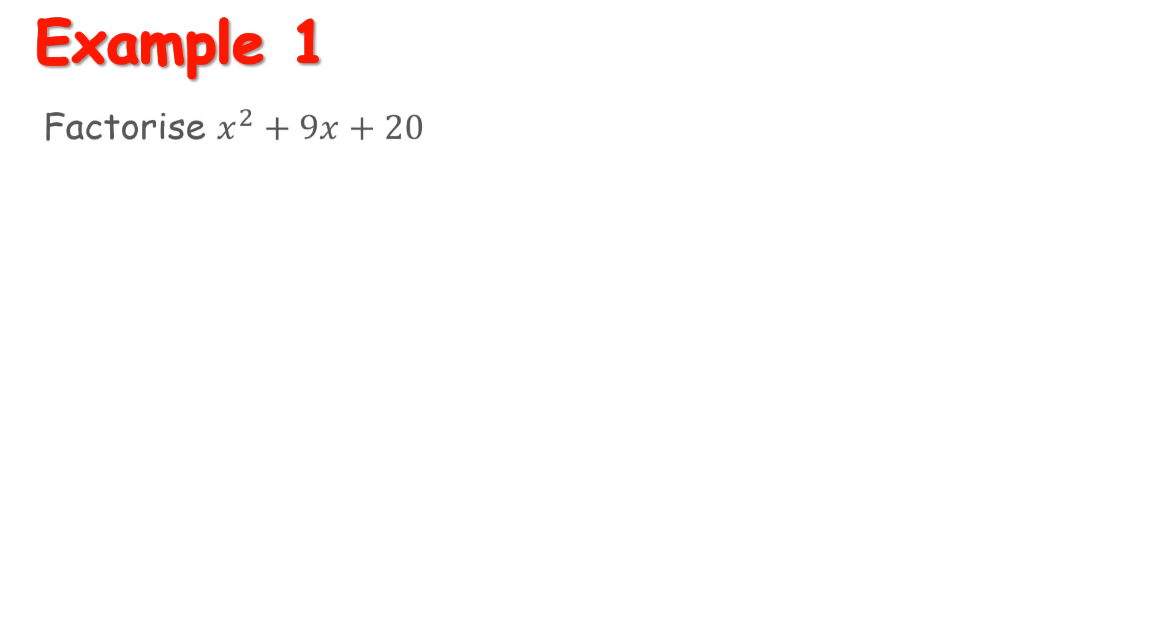So let's do an example that we would have already seen and we're going to look at how this new shortcut would work. So for guide number, what we would usually do here is we would say that our guide number is plus 20 and we want the factors which add to give us 9. Now this bit doesn't change, so if this is the bit you hate, unfortunately I can't help out with that.